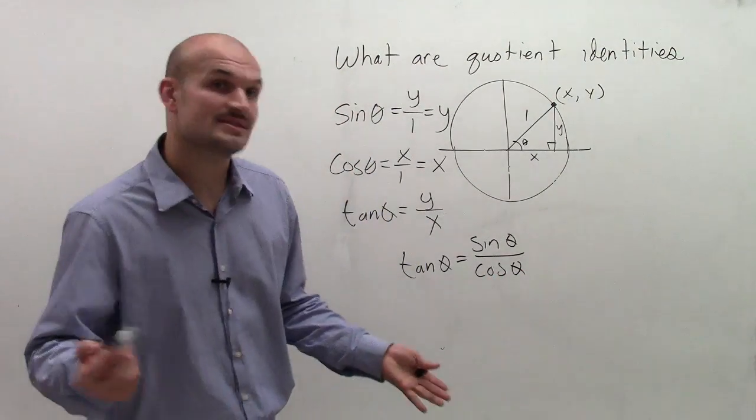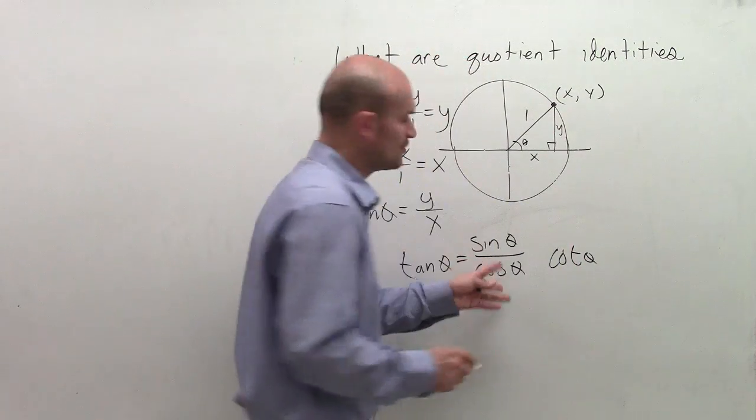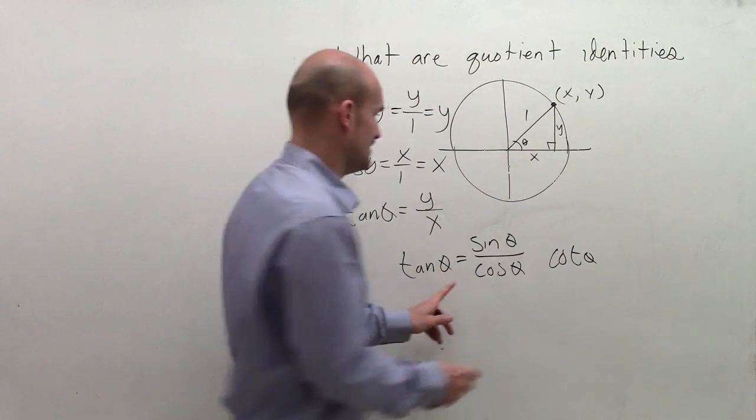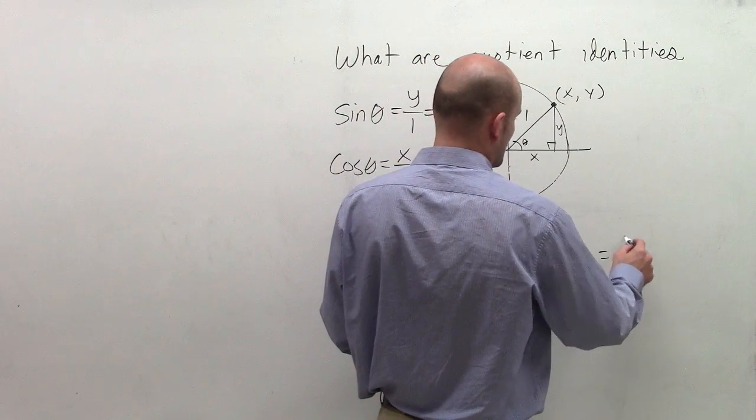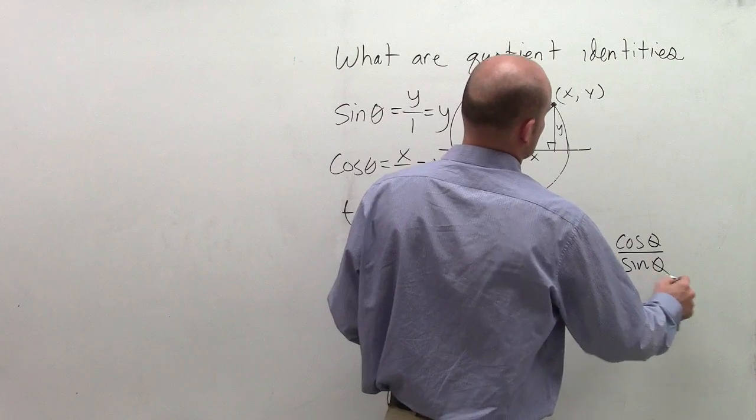And remember our reciprocal identities. So cotangent of theta is the reciprocal of this identity, meaning it equals cosine of theta divided by sine of theta.